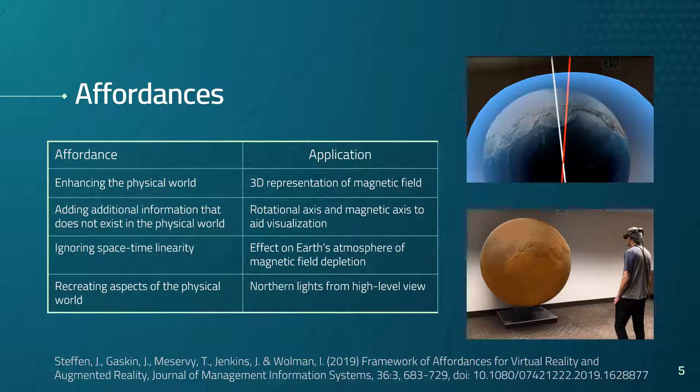AR also allows visualizing an alternate reality showing what conditions would be were the magnetosphere absent, seen as an orange shadow covering the Earth on this slide. This exploits AR's ability to ignore spacetime linearity. Additionally, though it is possible to see visible evidence of the magnetosphere, an observer would need to travel far north to do so. We used AR to help users experience aurora borealis regardless of their location, capitalizing on AR's ability to recreate aspects of the physical world in a location convenient to the user.